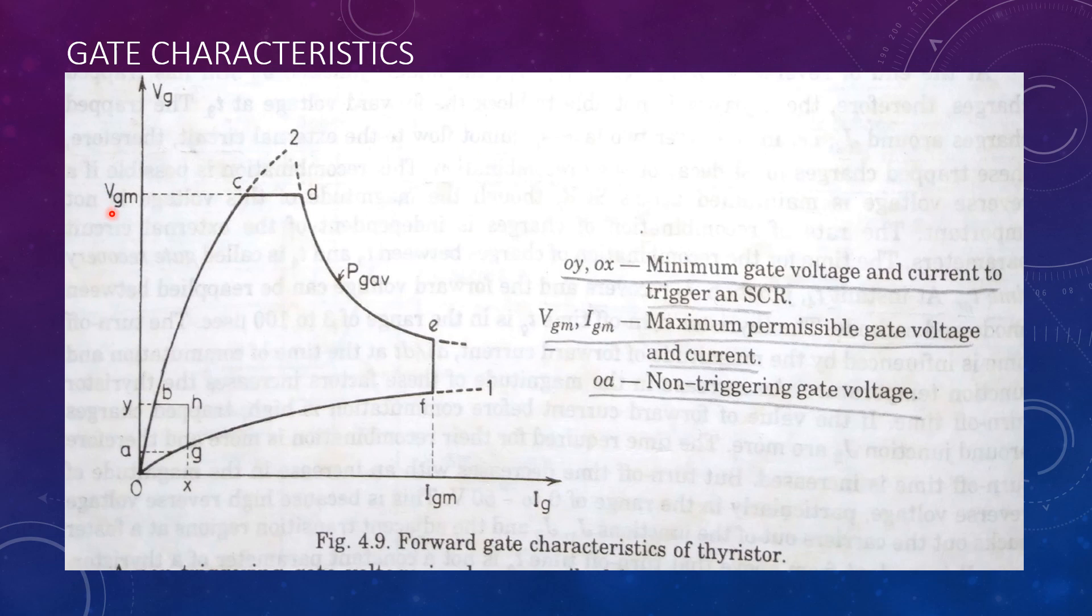Also, maximum value of gate voltage VGM and maximum value of gate current IGM is shown over here. These values must not be exceeded so that the thyristor does not get damaged.